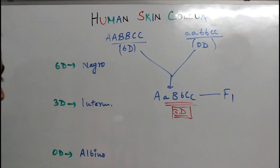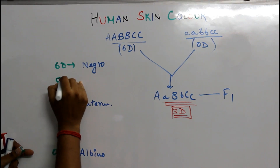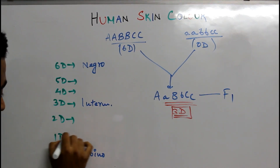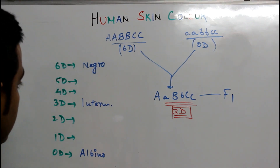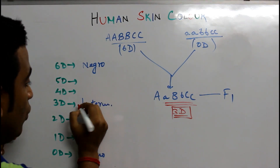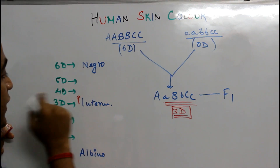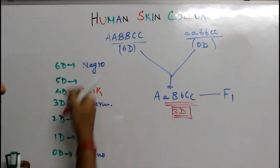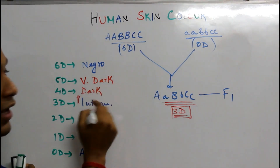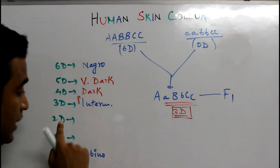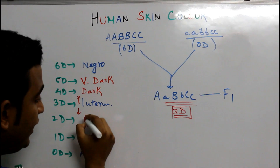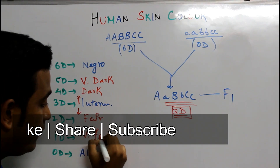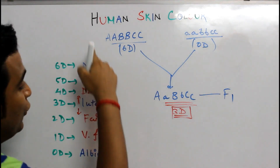Now, in between the intermediate and the extremes, who else is there? Going above the intermediate — increasing dominant copies — five dominant is dark, four dominant is very dark, and six dominant is Negro. Coming down from the intermediate — two dominant is fair, one dominant is very fair, and zero dominant is the albino. So this is your complete skin color spectrum.